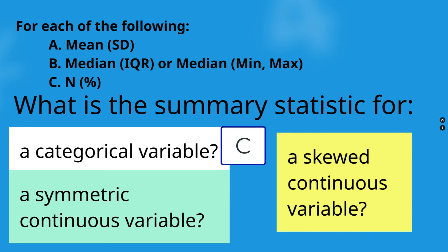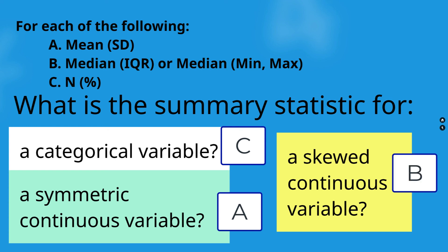For a symmetric continuous variable, report A — the mean and standard deviation. You'll also want to report the N associated with the number of responses. For a skewed continuous variable, the most appropriate measure of central tendency is the median with IQR (interquartile range), or the median with the minimum and maximum.